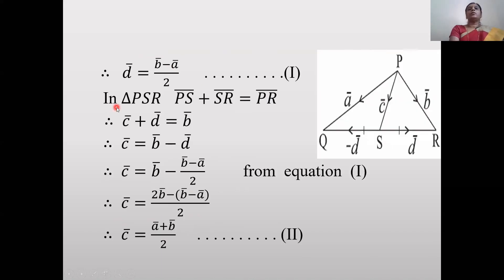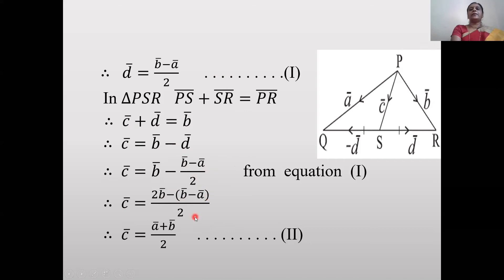In triangle PSR: PS̄ + SR̄ = PR̄, so c̄ + d̄ = b̄, giving c̄ = b̄ - d̄. Substituting d̄ = (b̄ - ā)/2 from equation 1: c̄ = b̄ - (b̄ - ā)/2 = (2b̄ - b̄ + ā)/2 = (ā + b̄)/2.